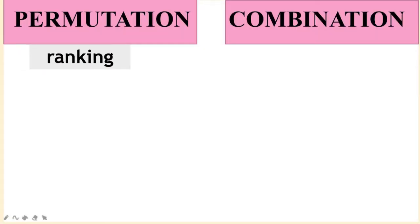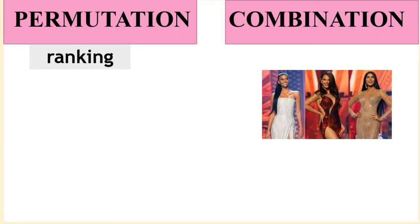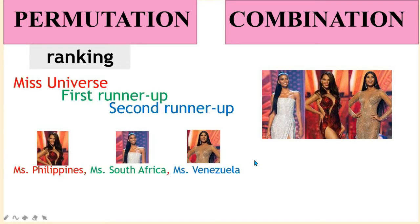When we talk about ranking, say for example in the Miss Universe pageant, the top three candidates are Miss South Africa, Miss Philippines, and Miss Venezuela. If Miss Philippines is Miss Universe, Miss South Africa is the first runner-up, and Miss Venezuela is the second runner-up —